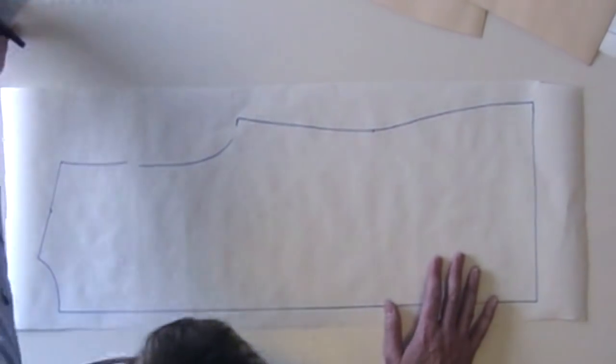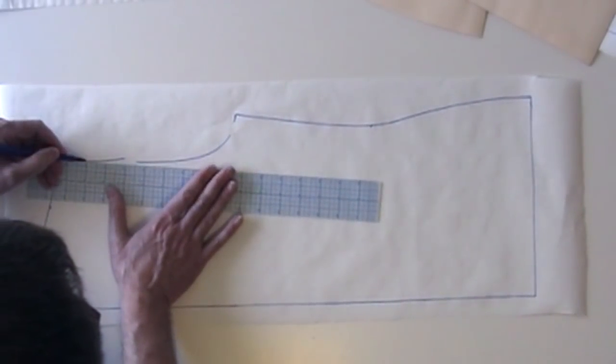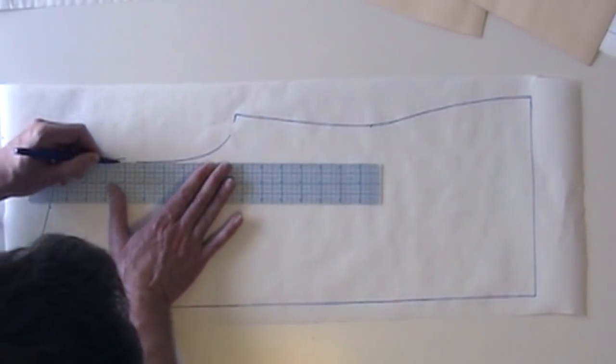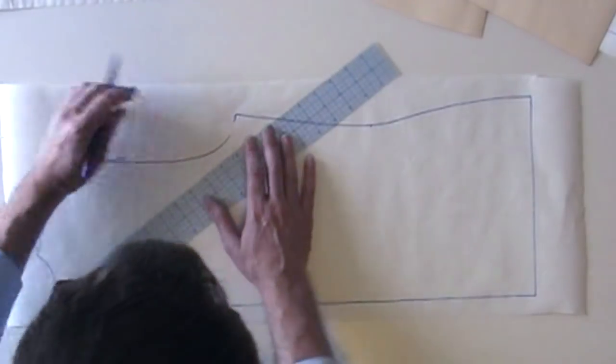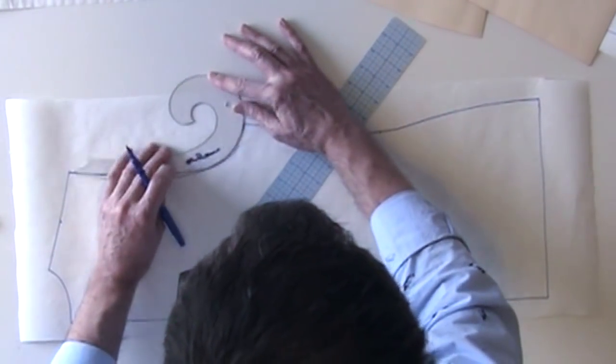Now, I simply need to blend these gaps in my back armhole. Use your French curve, if that helps you.